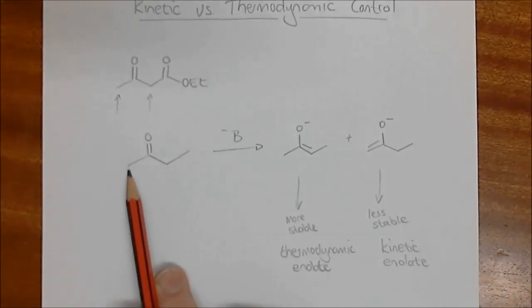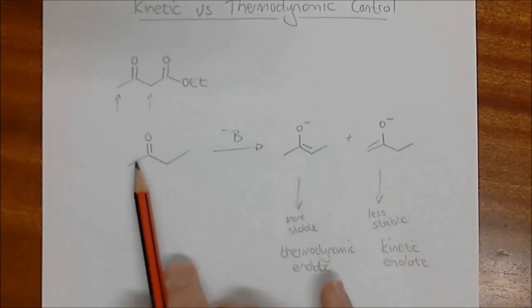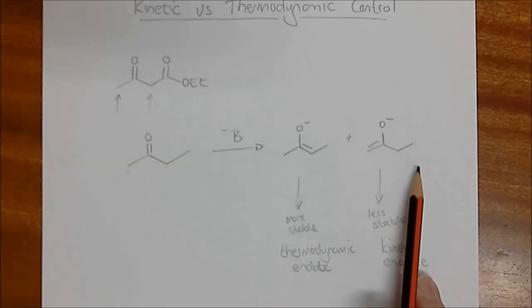And so this one is just, if you add a base to it, just statistically it's going to want to deprotonate here first. It's the first choice. And so if it does that, we get what is known as the kinetic enolate. It's much easier to get to that. Deprotonating here gives you the thermodynamic enolate.